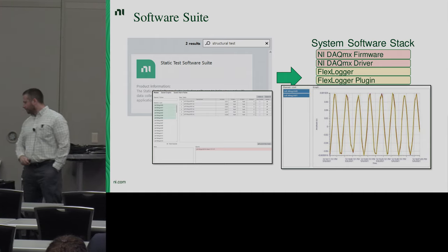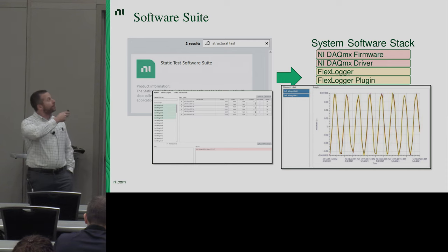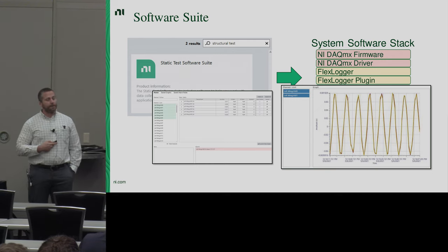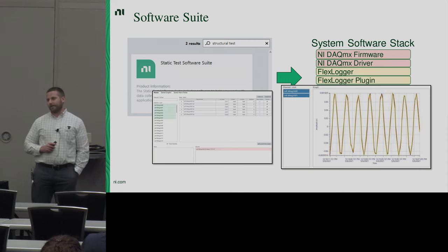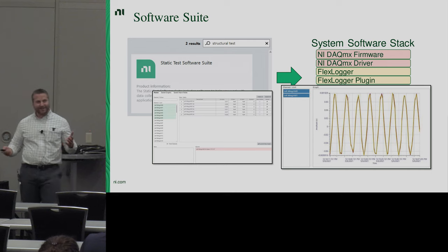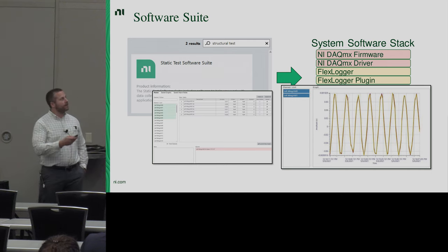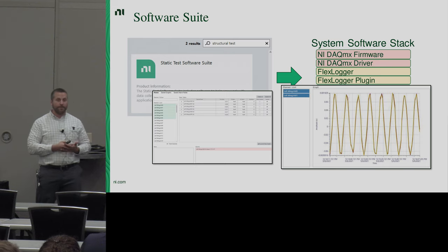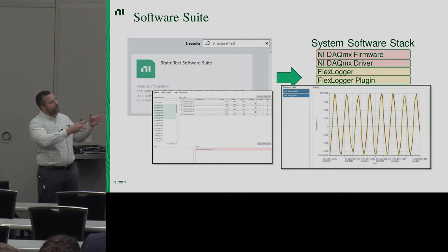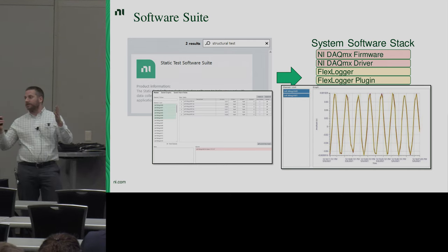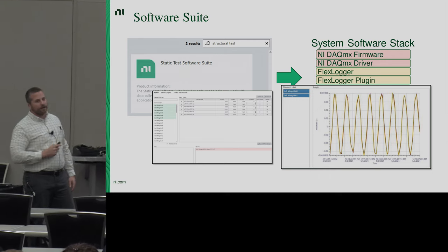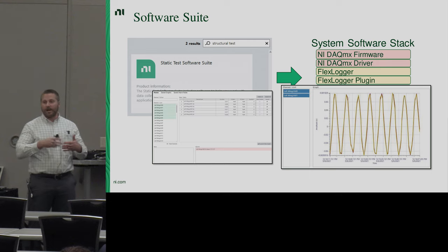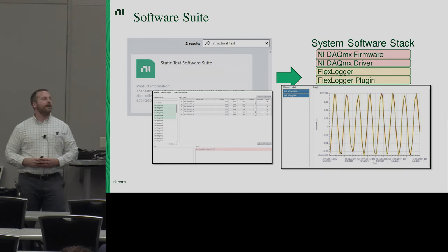If you open Package Manager and search 'structural test,' you'll find the Static Test Software Suite. Download it and you get DAQmx, FlexLogger, SystemLink, and a web application. The web application is hosted on the server — you open a browser, log into SystemLink with your username, and get a view of all channels in the system as reported by FlexLogger. You can select channels of interest and get live updates in a table of current values, create alarms against that data, and enter comments that show up in the FlexLogger log. You can select a subset of channels, hit Graph, and fill your screens with time history displays.